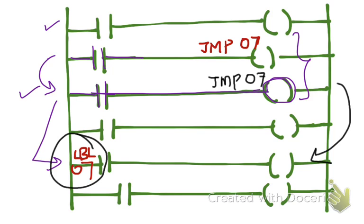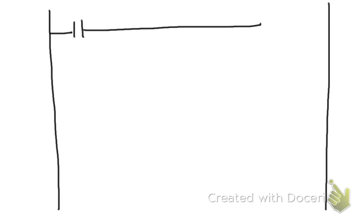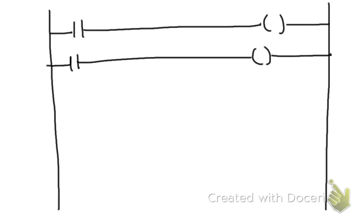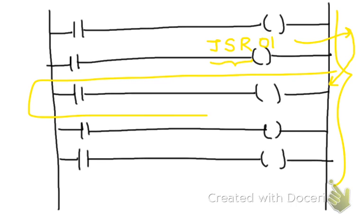This is all about the jump function without return. Now let us look at the jump function which has a return. As the name indicates, this function will allow you to come back to the program — that is, to the next line of the program. In this jump with return function, the keyword used is JSR, which stands for jump to subroutine. For example, jump to subroutine one means it goes to another part which is not part of the main program, executes that part, and then comes back by returning to the next line in the main program.